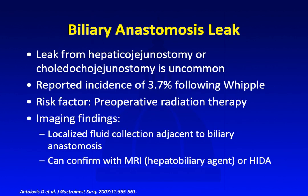Another potential site of leak is at the biliary anastomosis. Leak from the hepaticojejunostomy or choledochojejunostomy is also very uncommon, with a reported incidence of 3.7% following a Whipple. The major risk factor is preoperative radiation therapy. Imaging findings are usually a localized fluid collection adjacent to the biliary anastomosis. If a biliary anastomotic leak is suspected, it can be further confirmed with MRI using a hepatobiliary agent or with a HIDA scan.